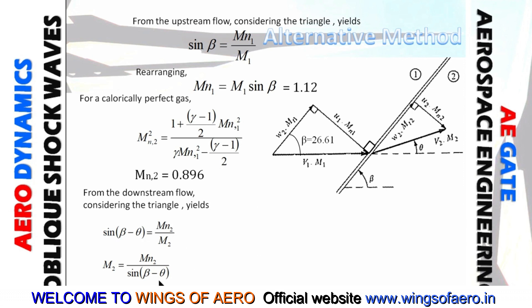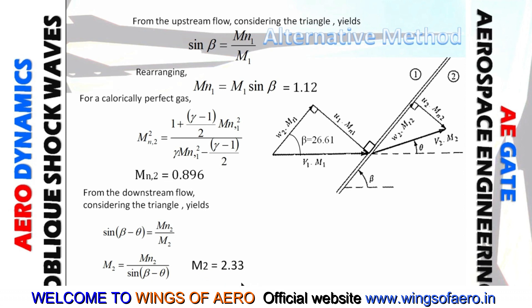Using the oblique shock triangle relation — with beta equals 26.61 degrees and theta equals 4 degrees, so beta minus theta equals 22.61 degrees — and substituting MN2 equals 0.896, we get M2 equals 2.33. This is the same result as the gas table method. Either method can be used to solve oblique shock wave problems.